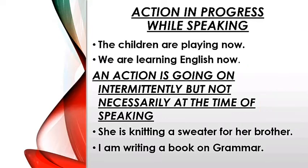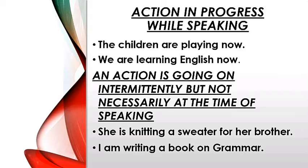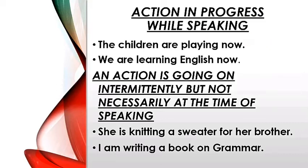Number two: an action is going on intermittently, but not necessarily at the time of speaking. Aisa action joh ruk ruk ke chalta hai, aur awashyak nahi hai ki bolte samay chal hi raha ho. Look at these examples. She is knitting a sweater for her brother. Woh apne bhai ke liye sweater bun rahi hai. Ho sakta hai woh abhi koi aur kaam kar rahi ho, but these days she is knitting a sweater. I am writing a book on grammar. Ho sakta hai main abhi nahi likh raha hoon, but these days I am writing a book on grammar. Toh ruk ruk ke chalne wale kaam ke liye bhi present continuous tense ka use kiya jata hai.